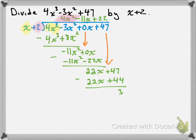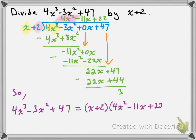That means we do not have a complete multiple of x plus 2 here. We do not have a full multiple of x plus 2 that goes into 4x cubed minus 3x squared plus 47 — we're kind of 3 too many from a full multiple. So we can write this out as: 4x cubed minus 3x squared plus 47 is equal to x plus 2 times 4x squared minus 11x plus 22, plus 3. That's how to divide polynomials using long division. Take care.